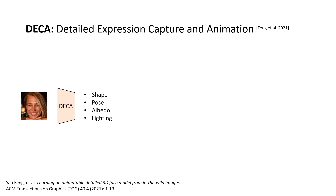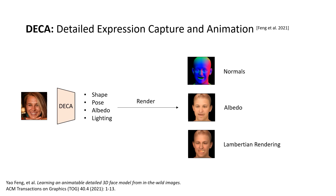Before we dive into Diffusion Rig, let's go through the fundamentals. DECA is a neural network that takes a single image as input and outputs different physical parameters of a 3D morphable model, or 3DMM, including shape, pose, albedo, and lighting. Once DECA has estimated all these parameters, we can render coarse physical buffers such as surface normals, albedo, and Lambertian image. One advantage of using such 3DMMs is that they can be easily modified to allow for controllable editing of facial appearance in a physically meaningful way.